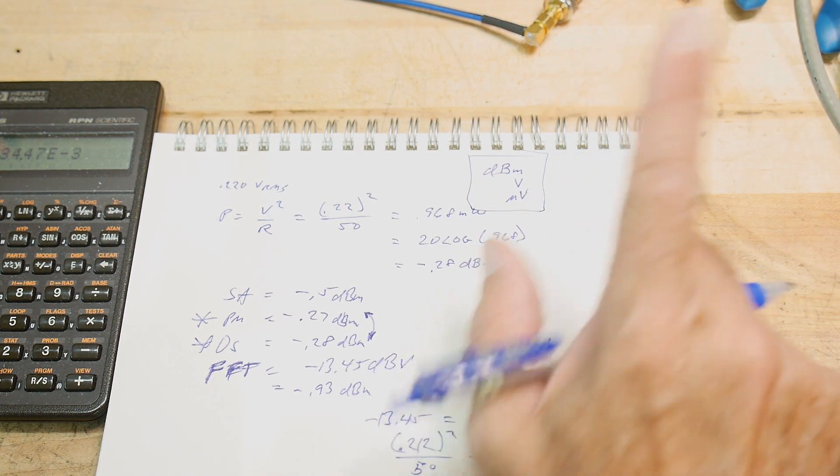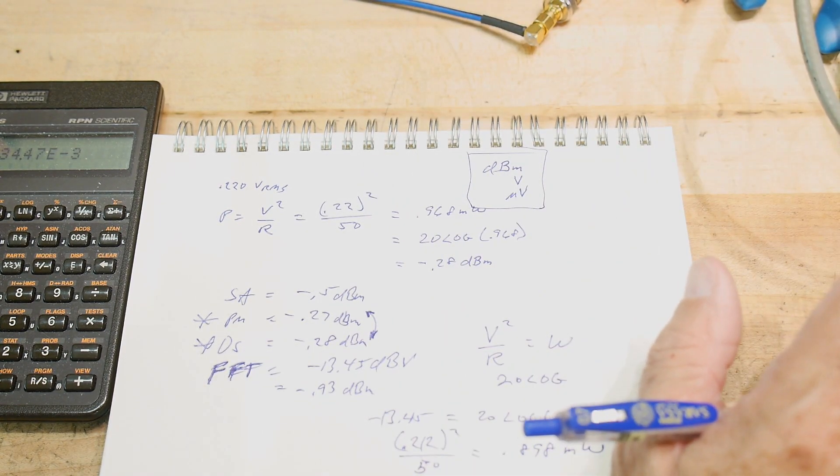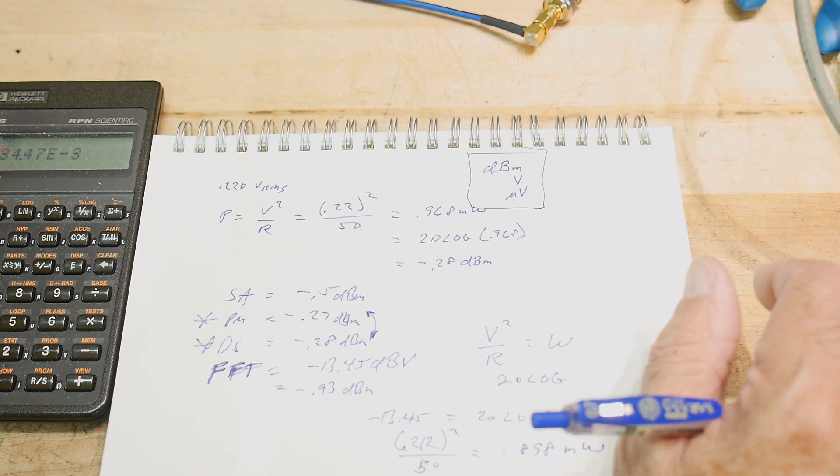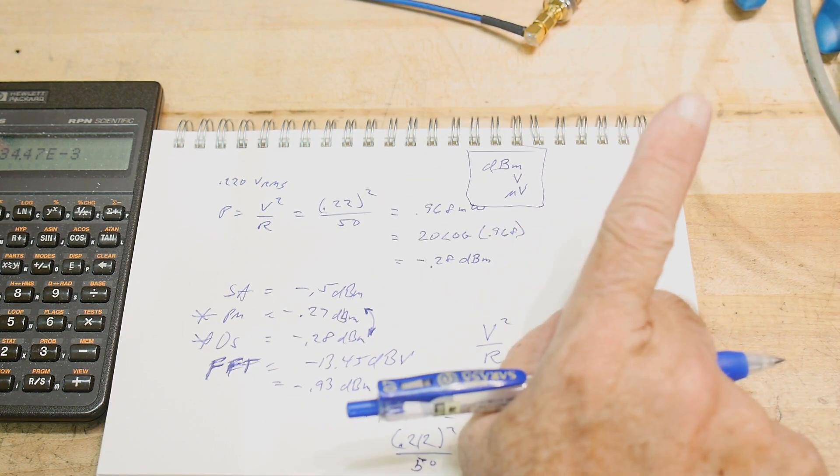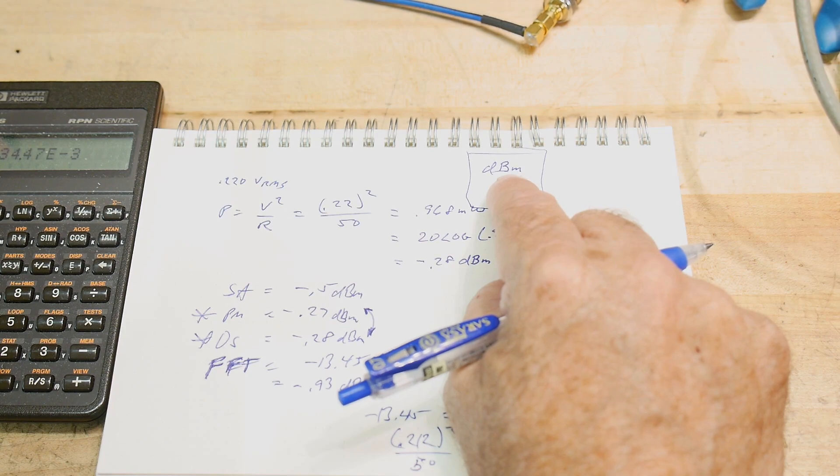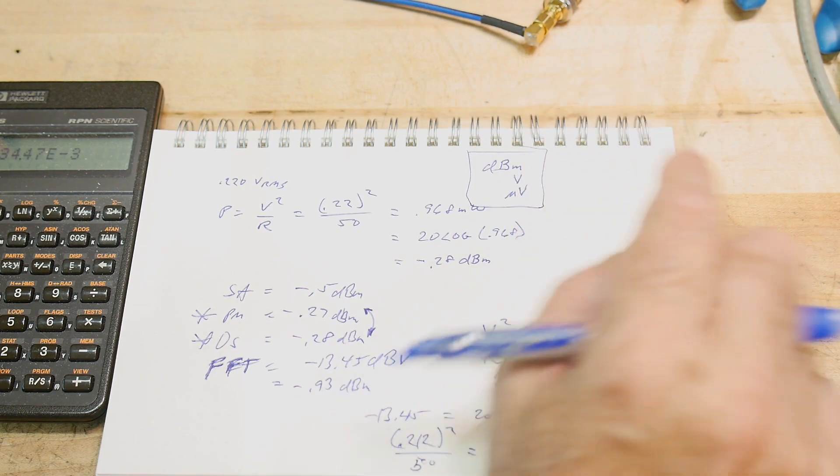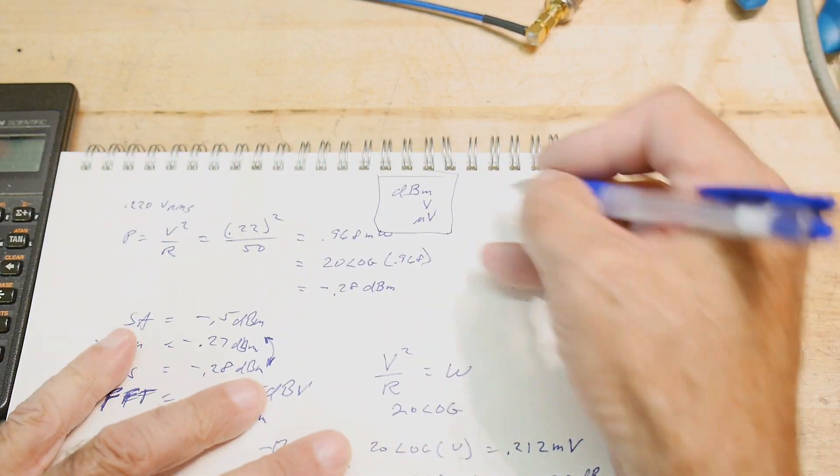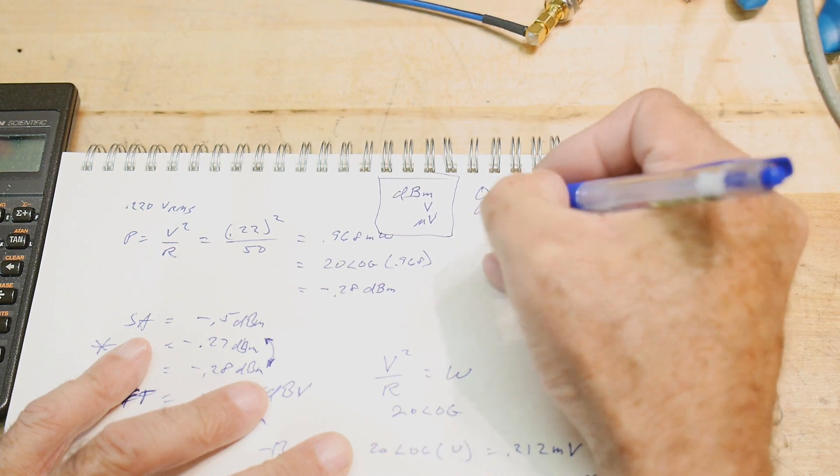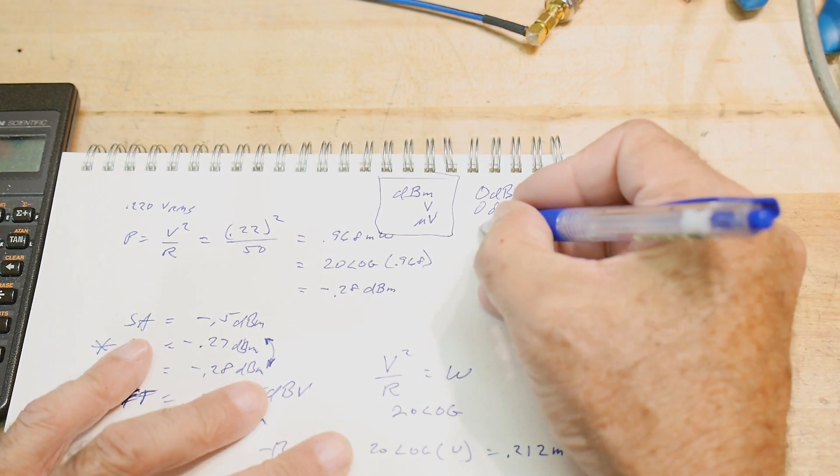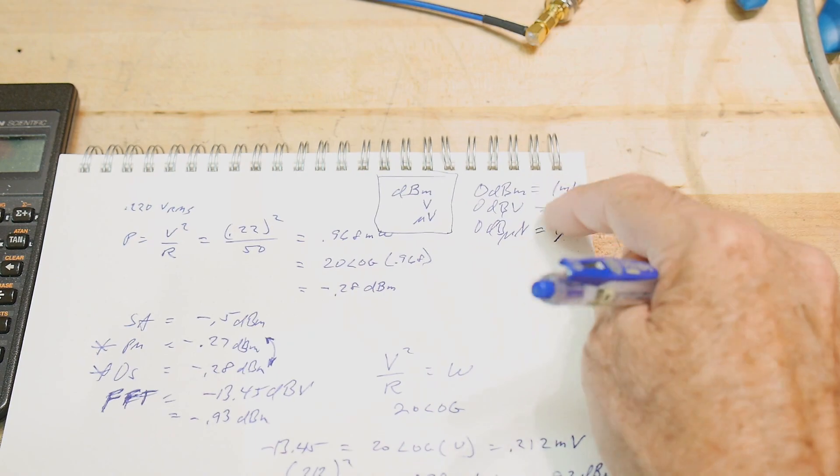dB volts is relative to one volt. So 0 dBm volts is one volt. 0 dBm milliwatts is equal to one milliwatt. 0 dBm microvolts is equal to one microvolt. Let's go ahead and write that down. 0 dBm equals one milliwatt. 0 dB volts equals one volt. 0 dB microvolts equals one microvolt. These are absolute numbers.